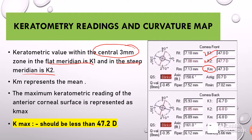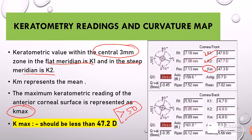Then we have another reading called K maximum. The maximum keratometric reading of the anterior corneal surface is represented as Kmax, and this Kmax should always be less than 47 — to be exact, less than 47.2. Whenever Kmax goes beyond 47 to 50, it becomes a moderate risk of keratoconus or ectasia, and whenever it is more than 50, it is definitely a very high risk of keratoconus or corneal ectasia.